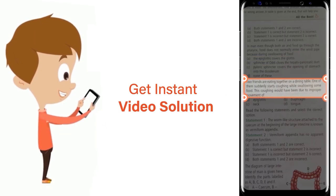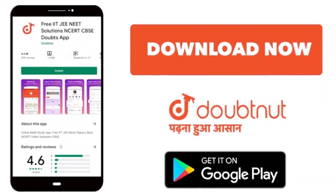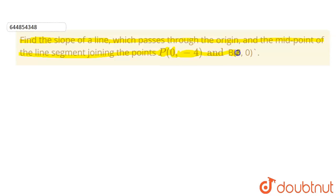Hello students. In this question we have to find the slope of a line which passes through the origin and the midpoint of the line segment joining point P which is (0, -4) and point B which is (8, 0).